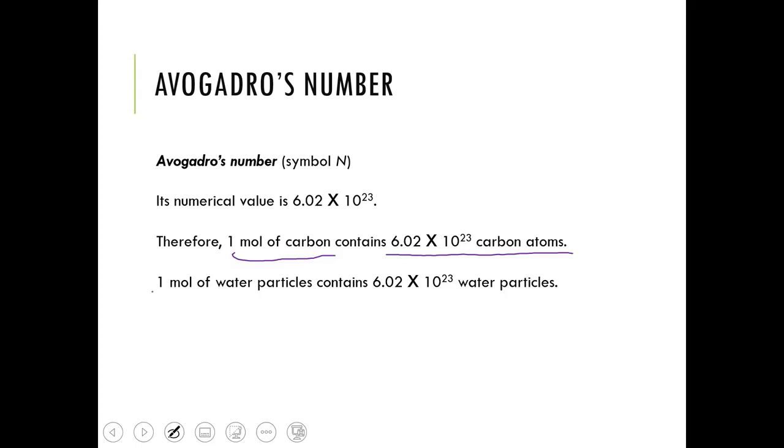If I had a mole of water particles, I have 6.02 times 10 to the 23rd water particles. So if I said I had 1 mole of copper ions, I would have 6.02 times 10 to the 23rd copper ions. So it is a counting unit. Now, this is a really big number. Really big.